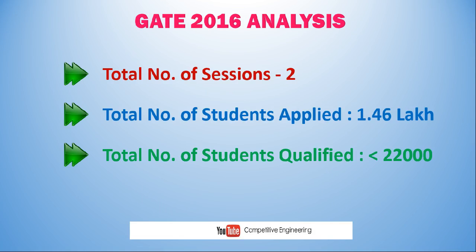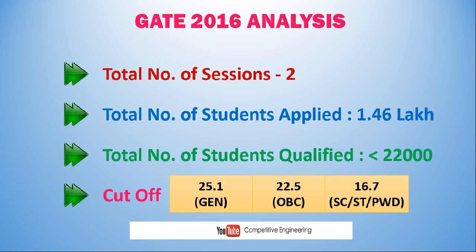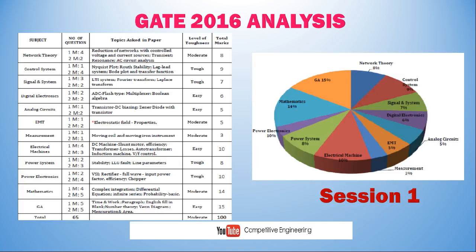Why are people disqualifying? The cutoff is considered very high, but the GATE exam contains 65 questions for 100 marks, and the minimum cutoff is just 25 marks in the general category. People are not able to get 25 out of 100 after studying four years because they don't know what topics to cover from the huge syllabus. This video will give you a clear understanding of the key topics.